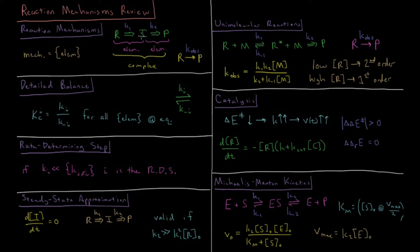The equilibrium constant for this elementary step would be the concentration of I divided by the concentration of R at equilibrium, and that is equal to the forward divided by the reverse reaction rate. This is true for all elementary steps when a reaction is at equilibrium, and is called the principle of detailed balance.